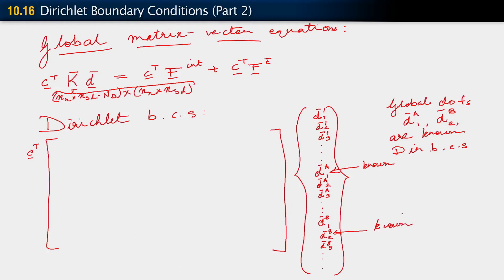When we carry out this matrix vector product, we know that this entire column and another one are going to be known.